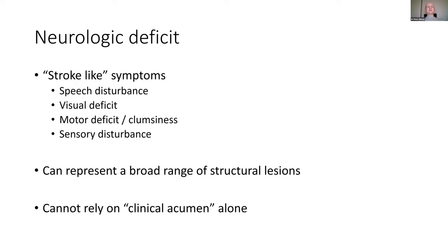Neurological deficit, just like with the spine, is a real red flag. Stroke-like symptoms are something of an emergency — time is brain. This can include simple things such as speech disturbance, visual disturbance, motor deficit or clumsiness, or sensory disturbance, and can represent a broad range of structural lesions. The key with this is that you really can't rely on clinical acumen alone if someone has progressive neurological deficit.